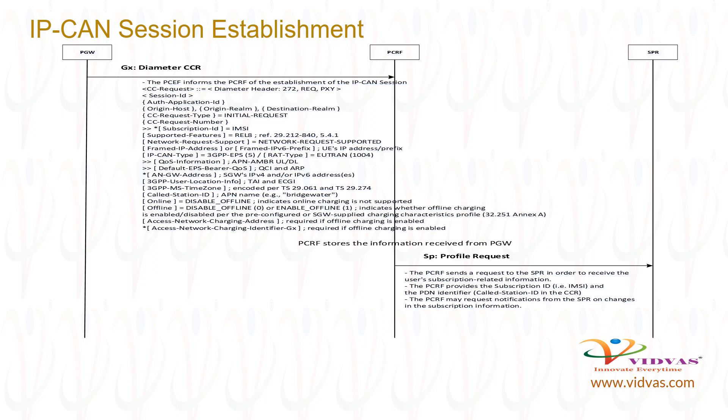After receiving the CCR message from PGW, PCRF stores the information. PCRF sends a profile request message to SPR over the SP interface. The PCRF sends the profile request to the SPR in order to receive the user's subscription-related information. In the request, the PCRF provides the subscription identifier, which is MSISDN, and the PDN identifier, which is called station ID in the CCR message.